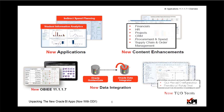Moving on to what's in the new BI Applications: it has new applications — student information analytics and indirect spend planning — new enhanced content for financials, HR, projects, and several other modules like CRM. It is built on the new OBIEE platform 11.1.1.7, and the major change is the ETL portion, which has been re-architected with Oracle Data Integrator and an optional component, Oracle GoldenGate. It also now comes with a new set of GUI-based tools which help with deployments, configuration, and functional setups.